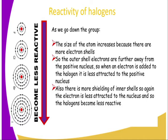Regarding the reactivity of halogens — as we go down the group, the size of the atom increases because there are more electron shells, that is an increase in the number of occupied energy levels. The outermost energy level electron gets further away from the positive nucleus. When an electron is added to the halogen, it is less attracted to the positive nucleus, and there is more shielding from inner shells.